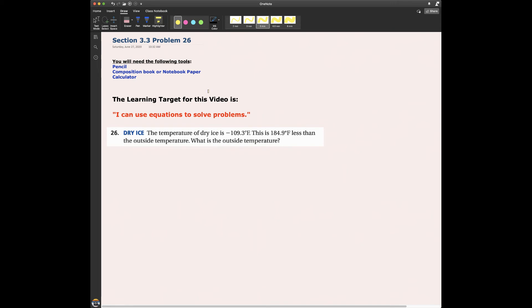All right, so let's see what's important. The temperature of dry ice is, so here's the temperature of dry ice. That's what its temperature is. Here's an important word in word problems like this. It says this. This is referring to that temperature of dry ice. So this is, and when I see the word is, I should think of equals.